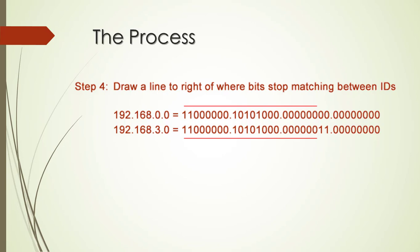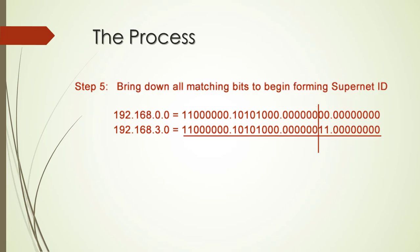Now we simply compare the bits and we bring down the same bit where they match in our individual subnets to begin forming our supernet ID. So here you can see that if it matches on that first bit between those two individual subnets we just bring that same bit down to begin forming our supernet ID and we do that all the way across the board.